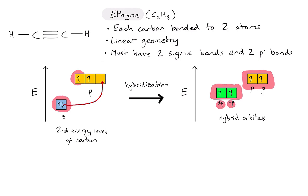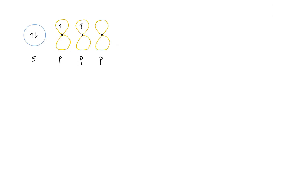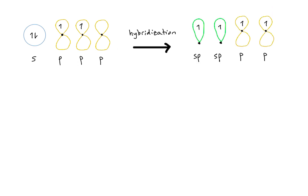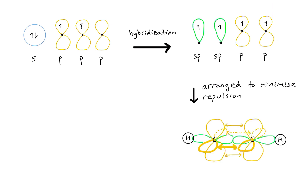Drawing pictures of those orbitals: starting from our initial point, hybridization has occurred to form two hybrid orbitals, with two p orbitals left over. Arranging these around each carbon atom to minimize repulsion, we can identify the hybrid orbitals on each carbon — one forms a sigma bond with a hydrogen, the other forms a sigma bond with the adjacent carbon. The same process occurs on the other side, giving us all three sigma bonds in the molecule. The two vertical p orbitals overlap above and below the bond axis to form a pi bond.